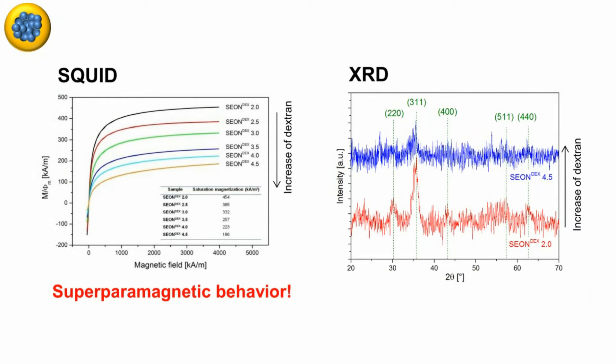Furthermore, we observed a reduction in saturation magnetization with increasing dextran content, which is caused by decreased crystallinity of the iron oxide.